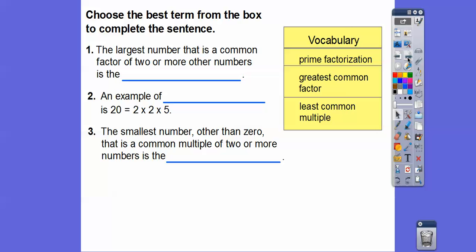So here's some vocabulary. We're going to choose the best term from this box to complete the sentence. The first one: the largest number that is a common factor—here's the key word, common factor—of two or more other numbers is the greatest common factor. It's the largest number that can be factors of each of the numbers right there.